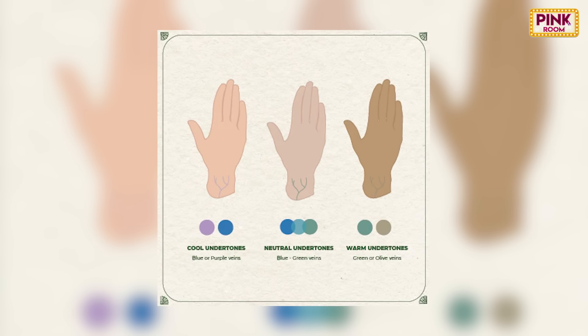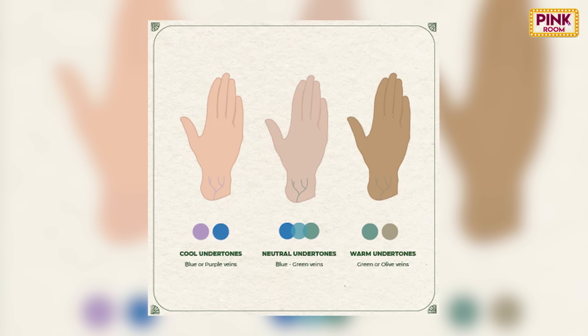The most important fact is to use the correct undertone. How do you know your undertone? The undertone is beneath your skin tone. Undertones have color hues: cool undertone, warm undertone, and neutral undertone. If you see blue and purple hues, it is a cool undertone. If you see green or olive hues, it is a warm undertone.